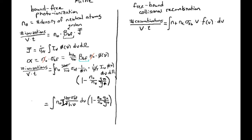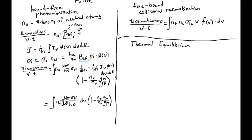To relate the two cross-sections σ_bf and σ_fb, we set the number of recombinations equal to the number of ionizations and assume thermal equilibrium. Importantly, this thermal equilibrium assumption is used only as a calibration point — the resulting Milne relation does not depend on thermal equilibrium. We know that in equilibrium these rates must balance, which fixes the relationship between the cross-sections. The Milne relation therefore holds beyond thermal equilibrium.